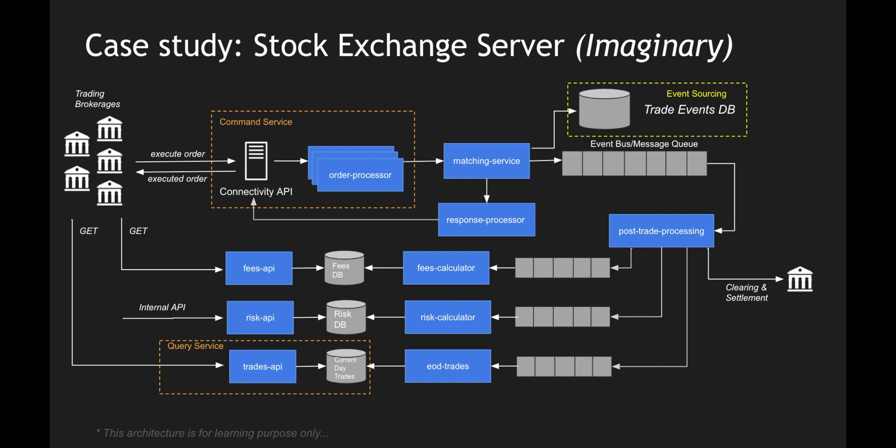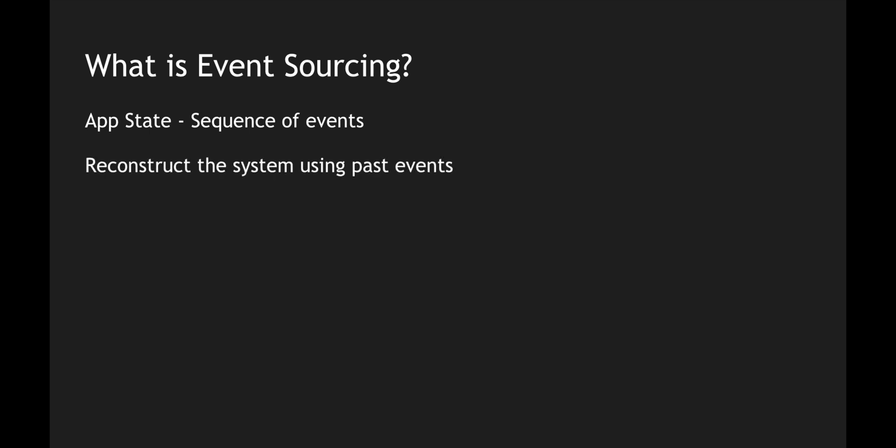This is the complete architecture for a system built using event sourcing and CQRS. Now let's understand what event sourcing is. Based on the example, we got a sequence of events and you can understand the state of an application using these events. All the sequential messages inside the events database create the state of an application. We could recreate the state of current day trades, or calculate fees again from the sequence of messages — that's where reconstructing the system using events helps us.